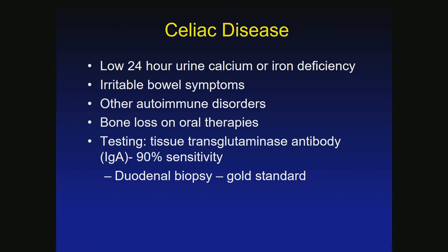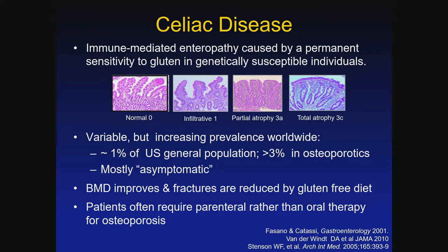If they go on the gluten-free diet, it's not worth getting the biopsy because it will be normal. We can argue whether you really need the definitive diagnosis — if the antibody test goes down and they're feeling better or the 24-hour urine improves, that's helpful. The duodenal villi show nice filaments normally, but in celiac disease there is villous atrophy. It affects about 1% of the U.S. population and 3% of osteoporosis patients. Many are asymptomatic.